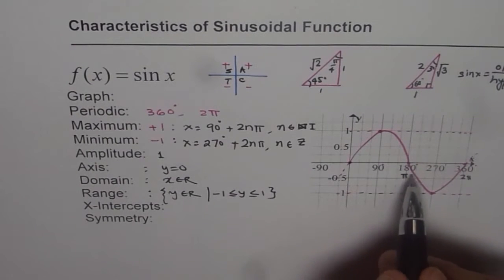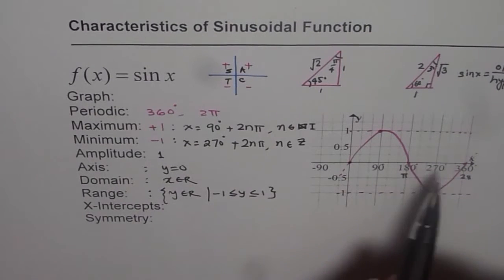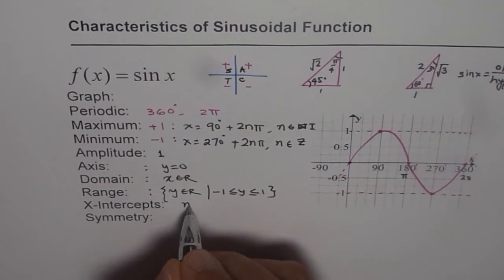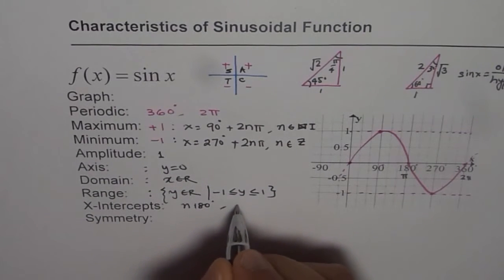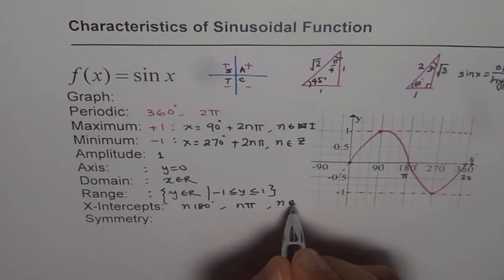So we can say nπ in radians. Or in degrees, we can say this is 180 times n. So we can say x-intercepts are at n times 180 degrees. Or we can say nπ, where n belongs to integers.